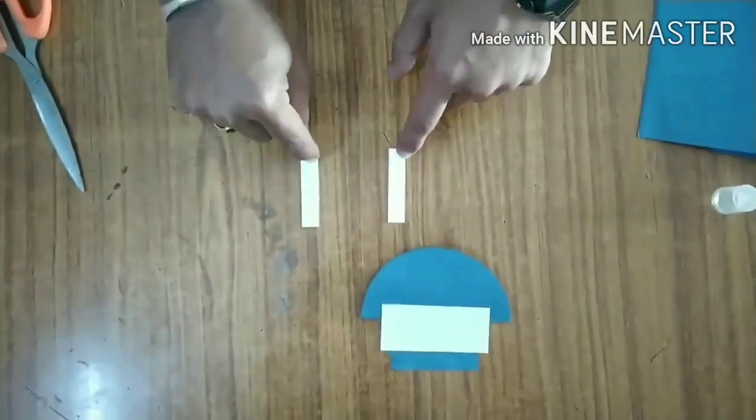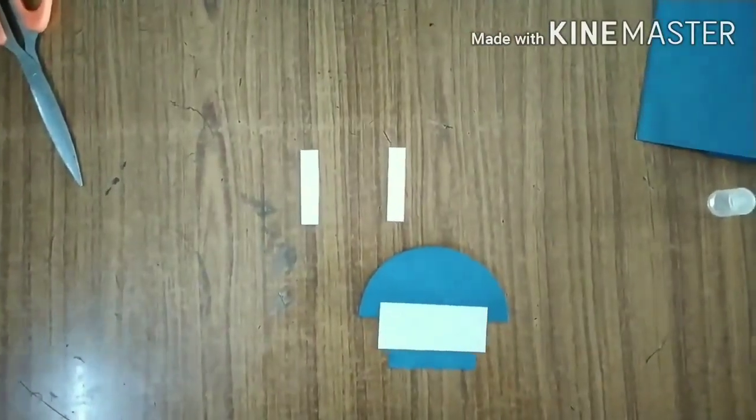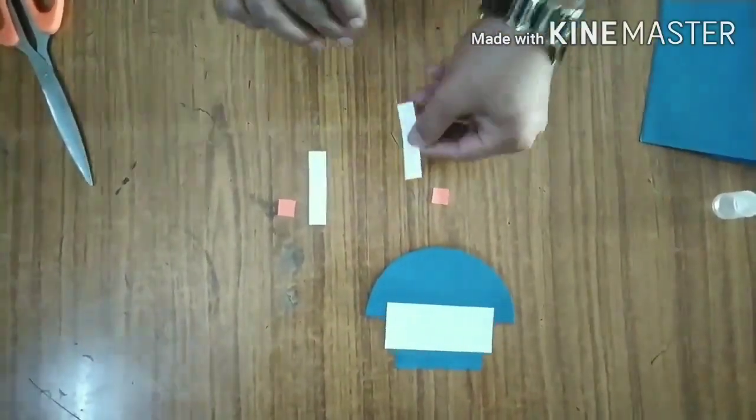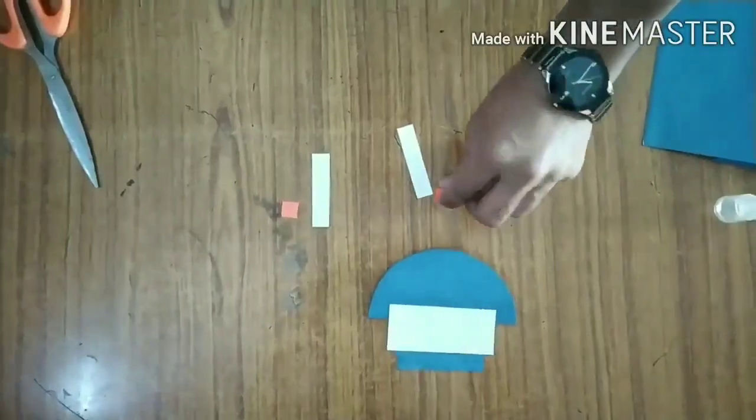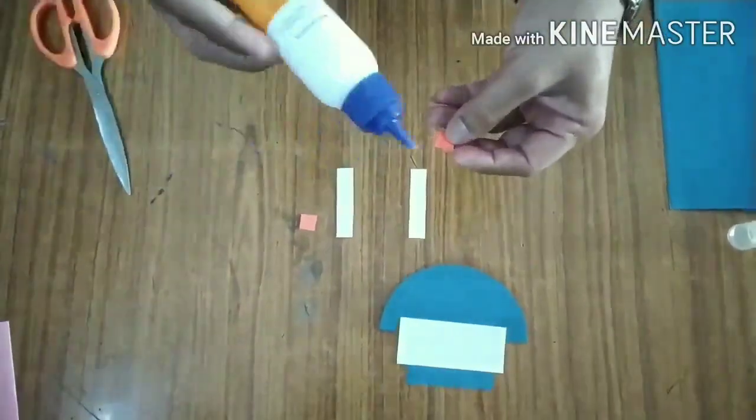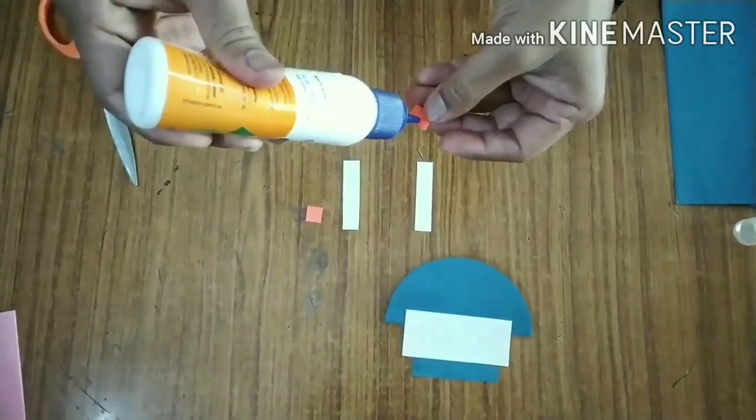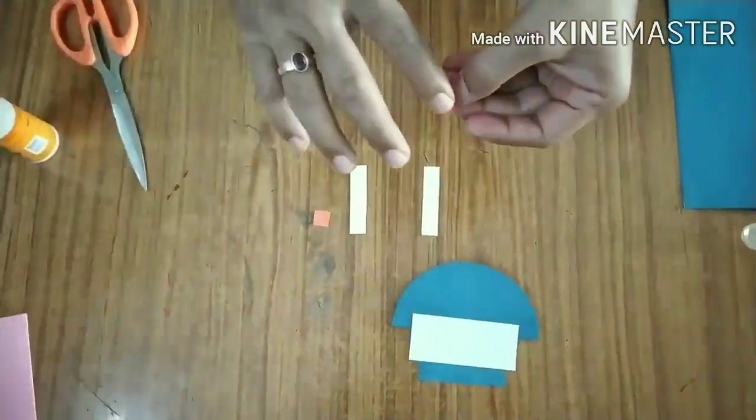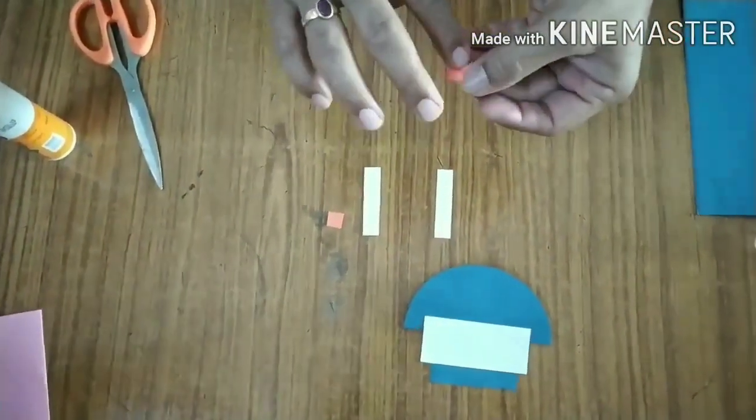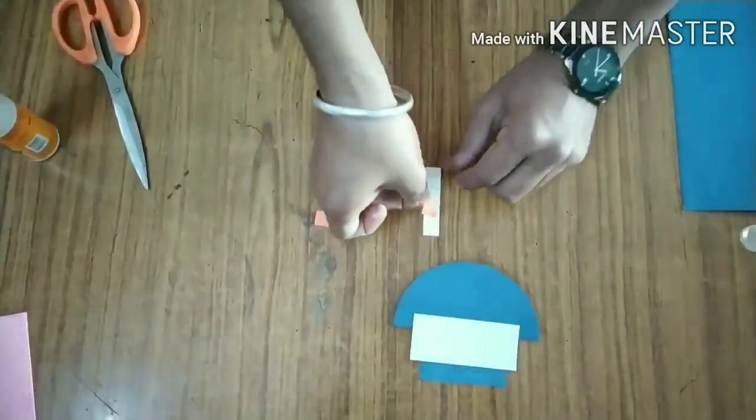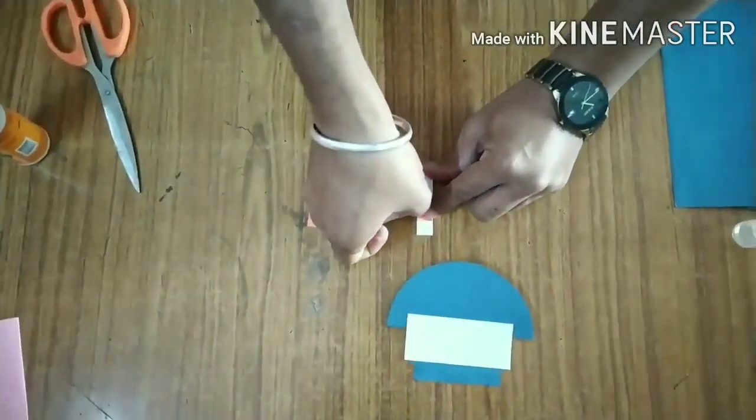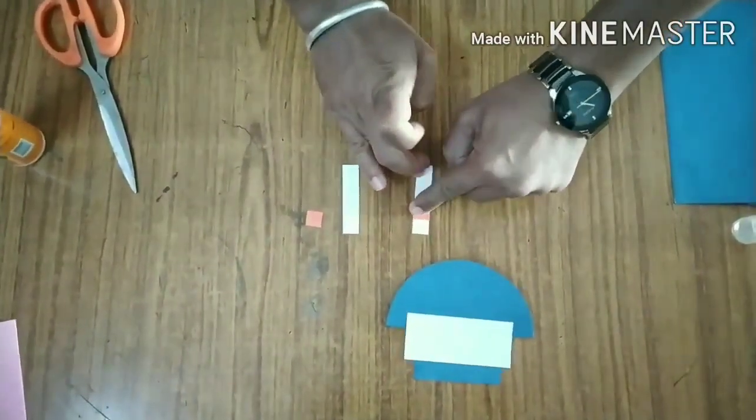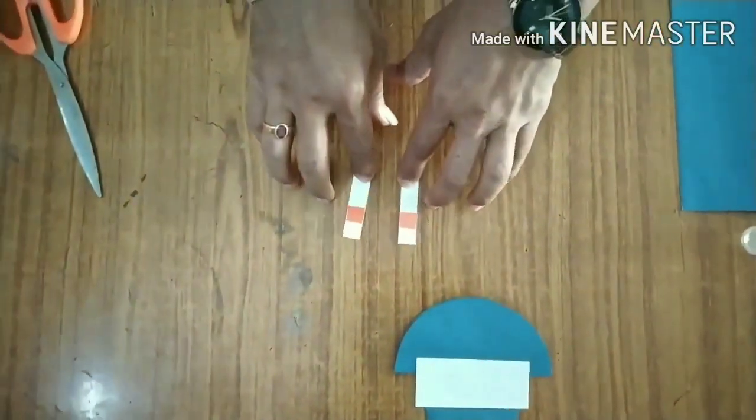Take two rectangular strips and two square strips of your own choice to make the boat look more realistic. Paste the square strips to the rectangular strips. Make sure you leave a little margin on the top. Make both the strips the same.